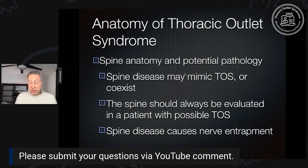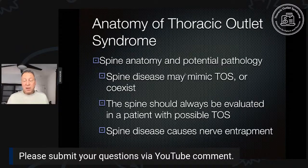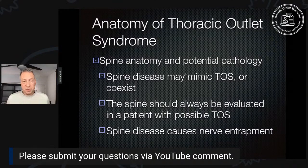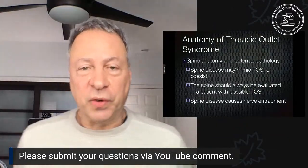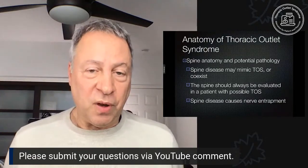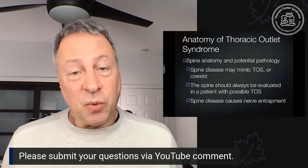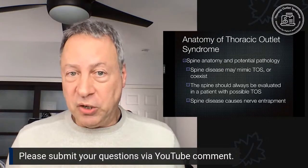So we've covered spine basic anatomy and potential pathology. Spine disease can mimic TOS, or it may coexist. A lot of patients with TOS tend to be younger, and degenerative changes come on with age, so we tend not to see as much overlap. If you're a 75-year-old, you're more likely to have degenerative change of your spine than TOS. But if you're a 25-year-old, TOS becomes more likely statistically than having degenerative changes in your spine.